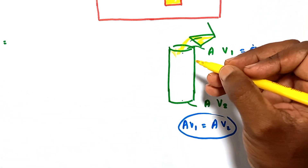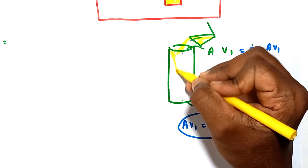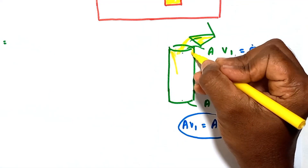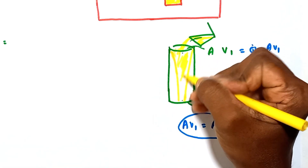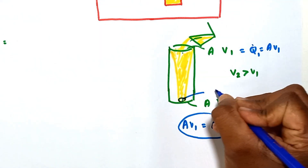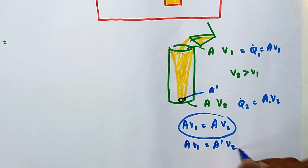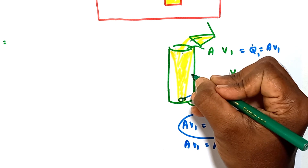Since velocity increases, instead of following the cylindrical path, the molten metal flow automatically narrows down the cross-section and forms a conical shape during pouring. Now with a reduced cross-section A' at the bottom, we can write A·v1 = A'·v2, and this equation is satisfied. However, when the flow narrows down to this reduced cross-section, something else happens.